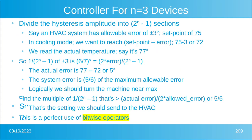For a three-device controller, the devices divide the hysteresis amplitude into seven sections — not eight — because zero doesn't actually do anything in our hysteresis. For example, say an HVAC system has an allowable error of plus or minus three degrees with a set point of 75. In cooling mode we want to reach a minimum of 72 degrees, then let it warm up to 78 degrees, then turn on again and cool back down to 72.